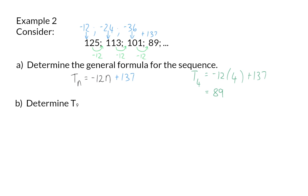Question b: Determine T9. So, here we want the value of the 9th term. So, I am going to take my formula and simply substitute n with 9 on the right-hand side as well. This will give me the value for the 9th term as 29.